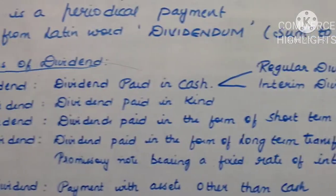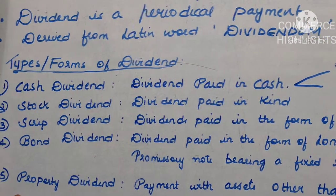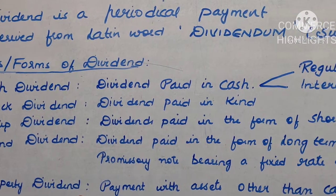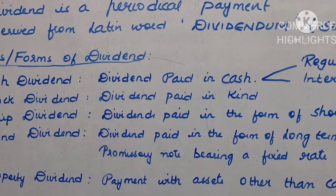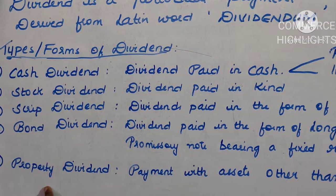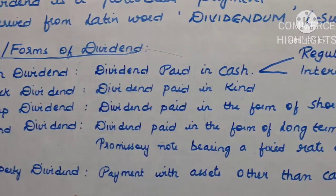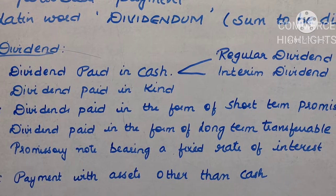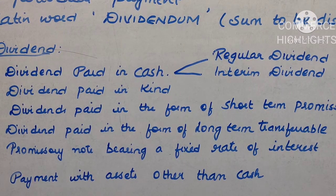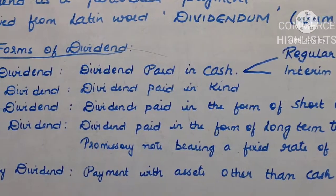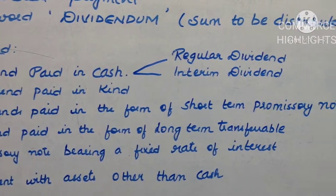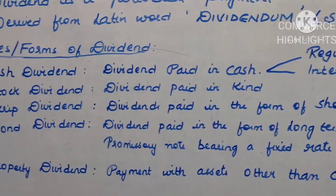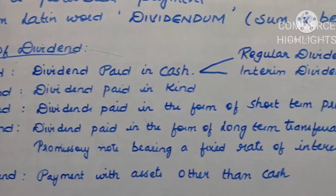The last type of dividend is property dividend. When dividend is distributed in the form of assets, it is generally termed as property dividend. This dividend is distributed by the company if it has a large number of assets that were used in operations but are now useless. Under such circumstances, in order to distribute those useless assets, the company will declare a property dividend.